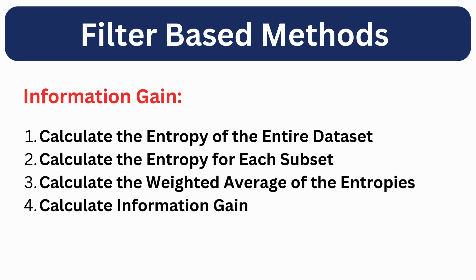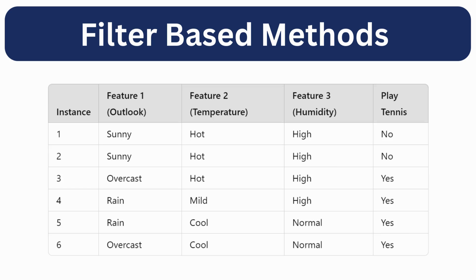First, we calculate the entropy of the entire dataset. Then we calculate the entropy of each subset. Next, we calculate the weighted average of these entropies. And finally, we calculate the information gain. Let's understand this using a simple example that contains three features and six instances.